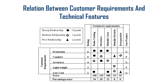Customer requirement is very essential while planning to design a product. Some of the customer requirements are protection, comfort, accuracy, lightweight, and low cost. Some of the technical features are resin coating, structure, metallic yarn, metallic particle, and dice particle. The strong relationship is given 10 points, the medium relationship is given 5 points, and the poor relationship is given 2 points. Weighted total scores and percentage scores are considered for making the technical properties.